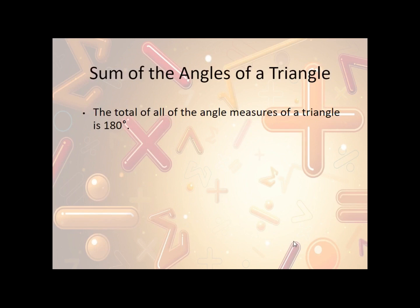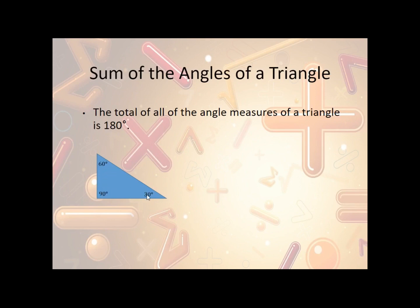Now, one of the properties of triangles says that the total amount of all the angles should end up being 180 degrees. For instance, we have a triangle here — this one's 90, 60, and 30. If we add all those together, we get 180 degrees.